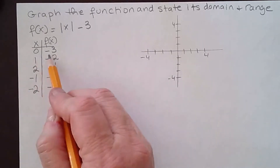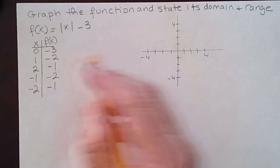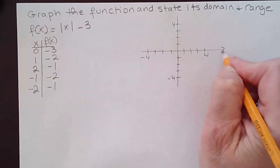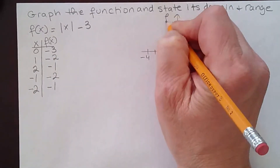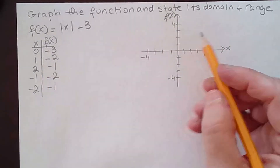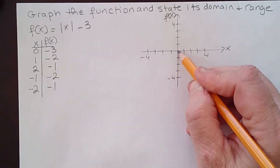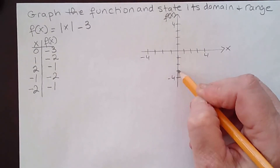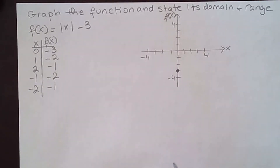When x is 0, f of x is negative 3. So there you have it — 1, 2, 3 right here on the y-axis.